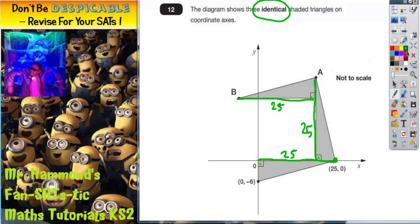What else do we know? Well, we also know that this shorter side here from 0 is 6 down. So any of the shorter sides must be worth 6. So this distance here is worth 6. This distance here is worth 6. And this distance here is also going to be worth 6.